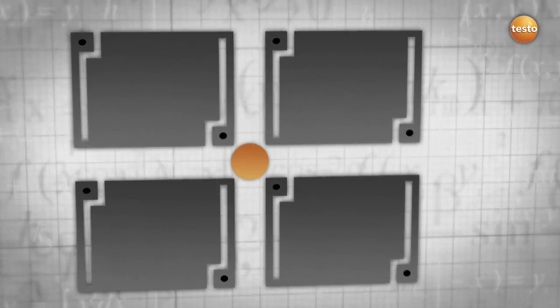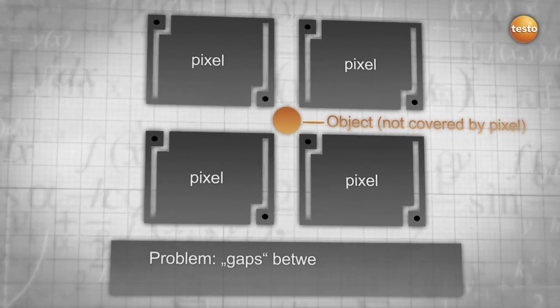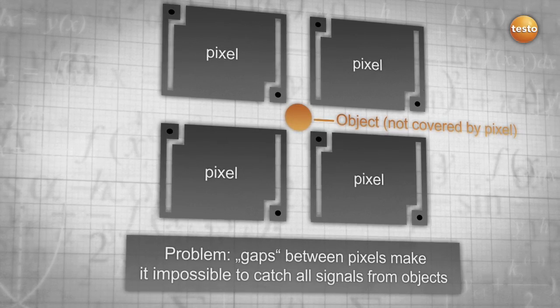One of the main problems with detectors are the gaps between each pixel. Through these gaps, it is almost impossible to catch all signals emitted by objects laying in between pixels. Super sampling provides a solution to this problem.